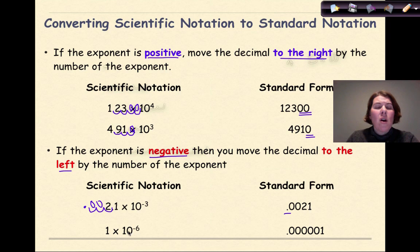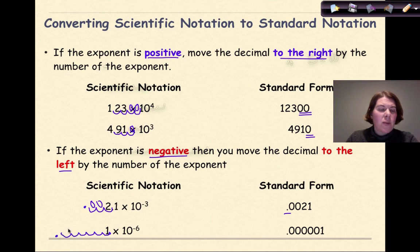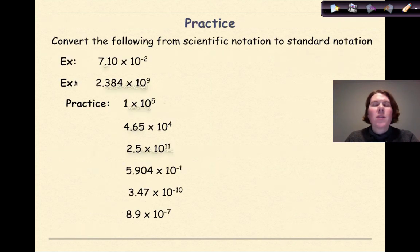If the exponent is negative, move the decimal to the left by the number of the exponent. For 2.1 times 10 to the negative 3, we move the decimal left: 1, 2, 3 — establishing the new decimal place and replacing the gaps with zeros, giving us 0.0021. For 1 times 10 to the negative 6, there's an assumed decimal after the 1. Moving left 1, 2, 3, 4, 5, 6 and filling in with zeros gives us a number with five zeros before the 1.